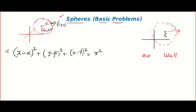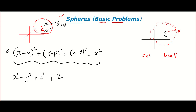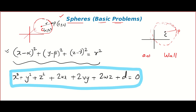Once you simplify this, we get the general format — a second-order general equation in x, y, z: x² + y² + z² + 2ux + 2vy + 2wz + d = 0. Here (x, y, z) is a random point on the sphere — it can be any point on the sphere.